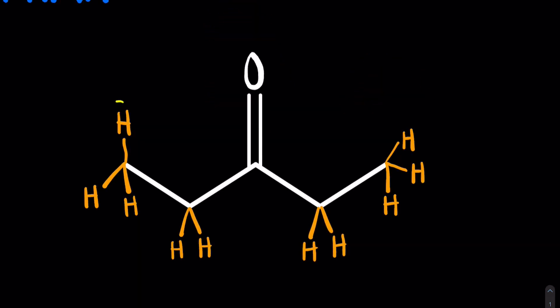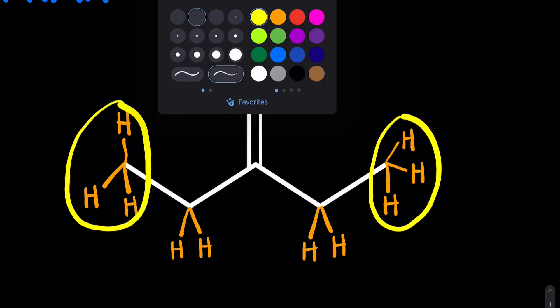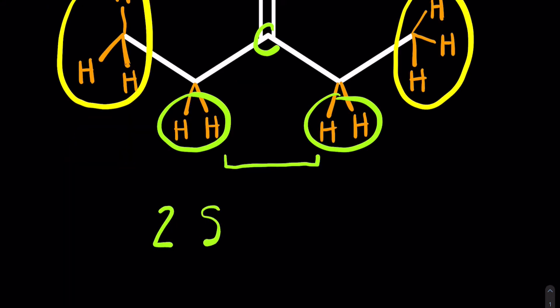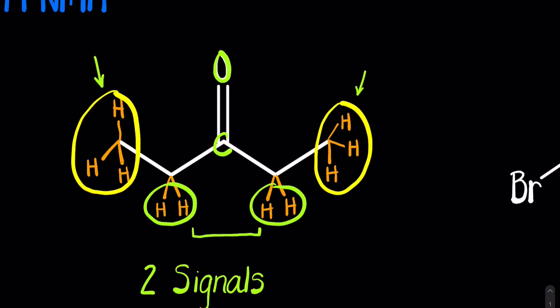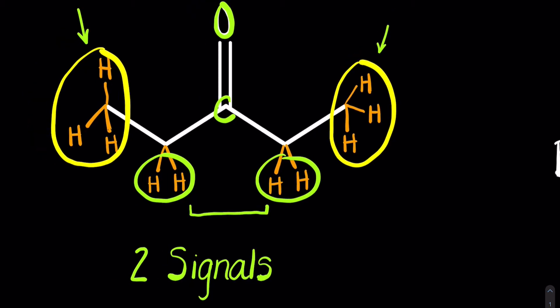Looking at this next molecule, it does have symmetry. These outer hydrogens will be chemically equivalent because they're experiencing the same chemical environment. The inner hydrogens, on the other hand, are experiencing a different environment than the outside hydrogens, but these two are the same because of the symmetry around this carbonyl. So with H1 NMR, this molecule is going to have two signals. The CH3 peaks on the outside will show up at the same peak with a 6H intensity, while these CH2 peaks will show up together with a 4H intensity.